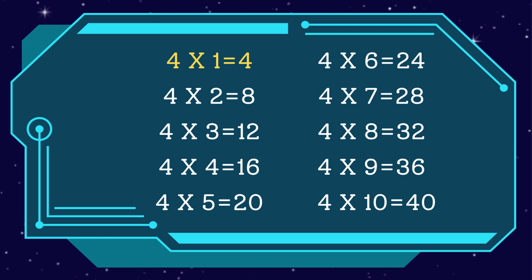Four ones are four. Four twos are eight. Four threes are twelve. Four fours are sixteen. Four fives are twenty. Four sixes are twenty-four. Four sevens are twenty-eight. Four eights are thirty-two. Four nines are thirty-six. Four tens are forty.